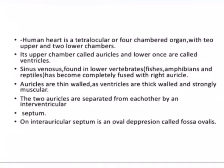The human heart is a tetralocular or four-chambered organ with two upper and two lower chambers. The upper chambers are called auricles and the lower ones are called ventricles. Sinus venosus, found in lower vertebrates like fishes, amphibians, and reptiles, has become completely fused with the right auricle. Auricles are thin-walled whereas ventricles are thick-walled and strongly muscular.